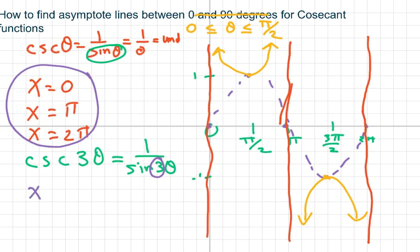So I'm going to get x equals 0 over 3, x equals pi over 3, and x equals 2 pi over 3.